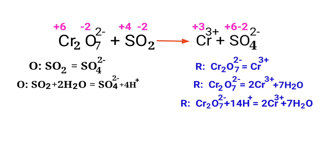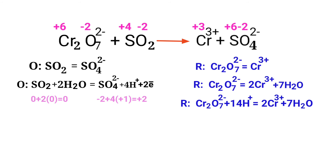For a redox reaction, the total charge should be equal on both sides. Checking the oxidation half-reaction, both sides are not equal. To make them equal, you should add electrons. Adding two electrons to the right side makes the charge equal to 0. The charges are now equalized in the oxidation half-reaction.